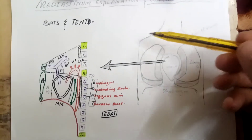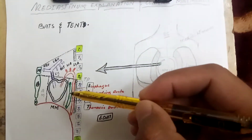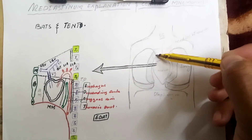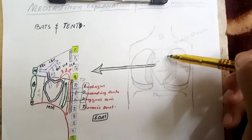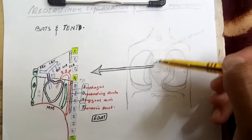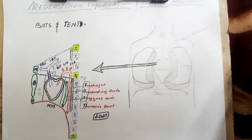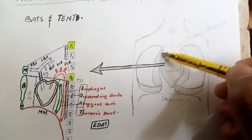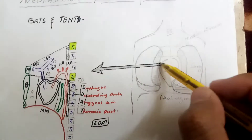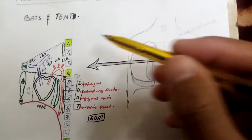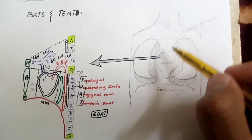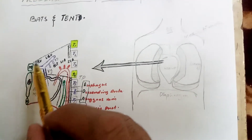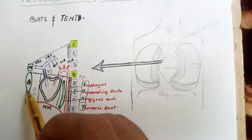Assalamu alaikum friends. Today I'm going to explain the mediastinum — its boundaries, contents, and a mnemonic for memorizing the contents. The mediastinum is the central part of the thoracic cavity, and I am going to take the sagittal section of the mediastinum, which I have shown here, extending from the sternum up to the vertebral bodies.